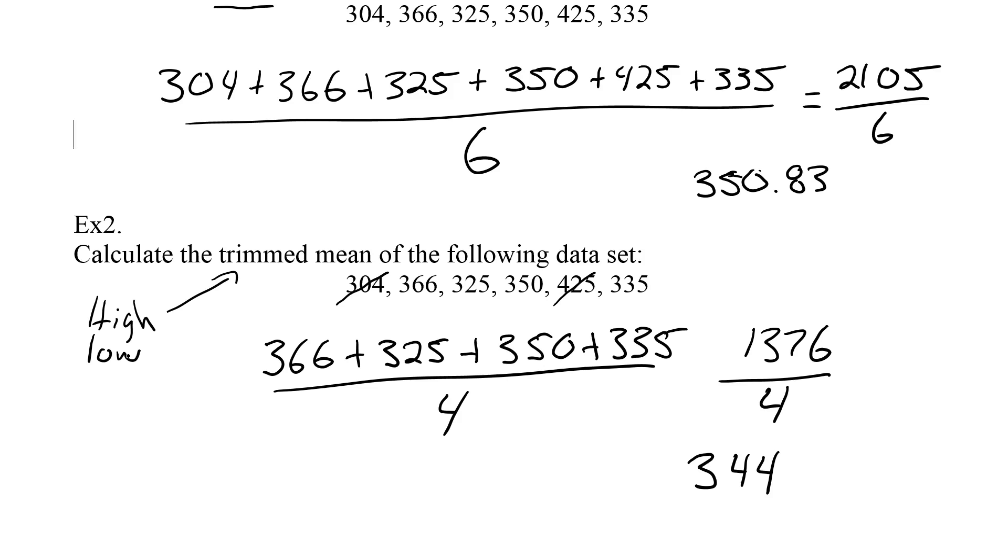A nice follow-up question here might be which of the trimmed values, the low one or the high one, affected the original mean the most. Did the 304 affect it, or the 425? You can see, because my trimmed mean is lower, it's lower than 350, that that high value must have really brought up that original mean. I take it out, and I have a better reflection of the average, 344.